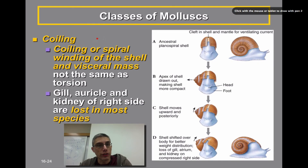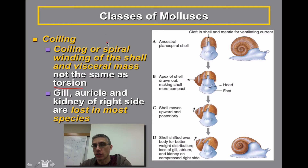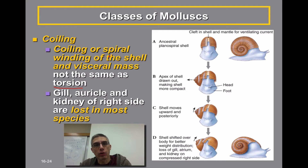Next, we're going to look at the process of coiling. It's really important to understand that coiling is not the same as torsion. Torsion was the repositioning of the digestive tract and mantle cavity from a more posterior to a more anterior position. When you talk about coiling, you're talking about the spiral or winding nature of a typical gastropod shell, and that spiral nature occurs not only with the shell but also with the visceral mass or organ mass of the animal.